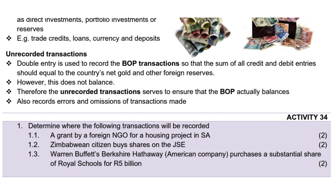As usual, we conclude with Homework Activity 34 on page 71. Question 1: Determine where the following transactions will be recorded. 1.1: A grant by a foreign NGO for a housing project in SA. 2 marks. 1.2: A Zimbabwean citizen buys shares on the JSE. 2 marks. 1.3: Warren Buffett's Berkshire Hathaway, an American company, purchases a substantial share of Royal Schools for R5 billion. 2 marks.